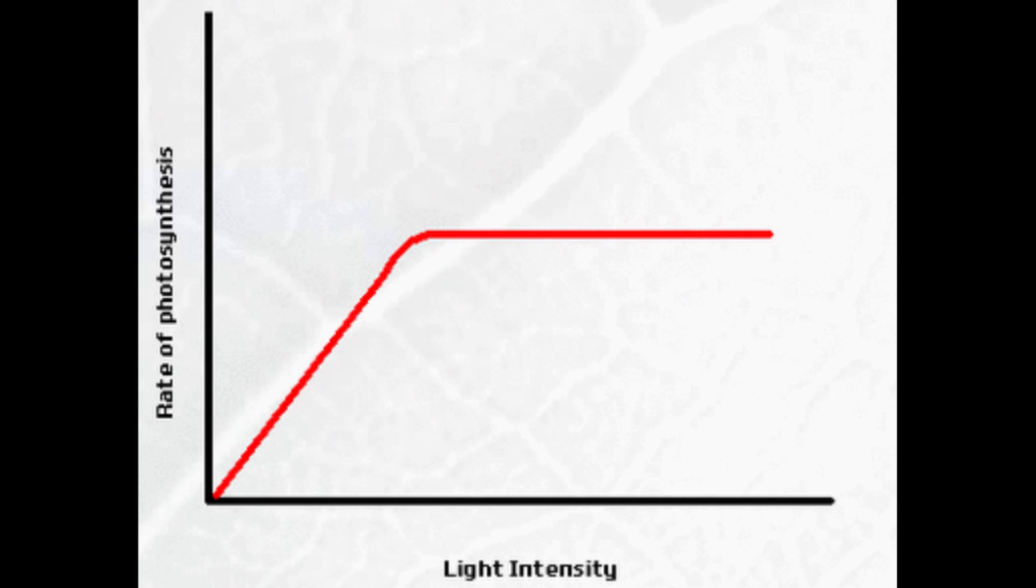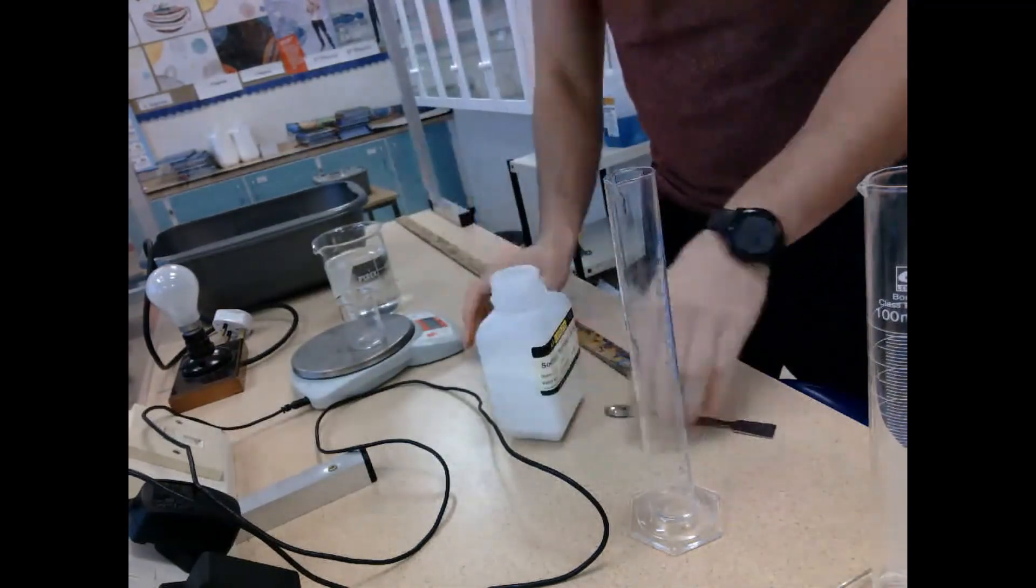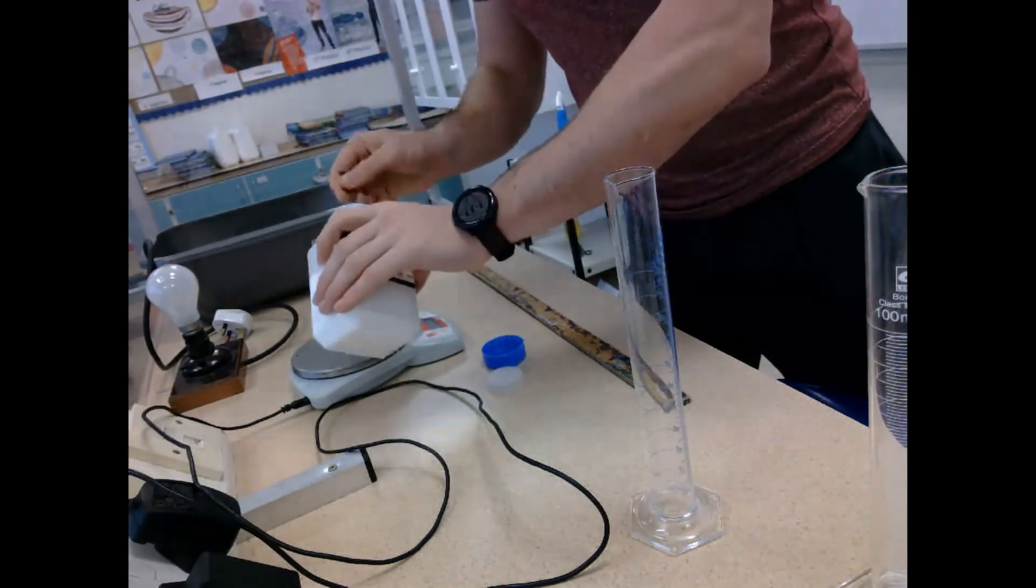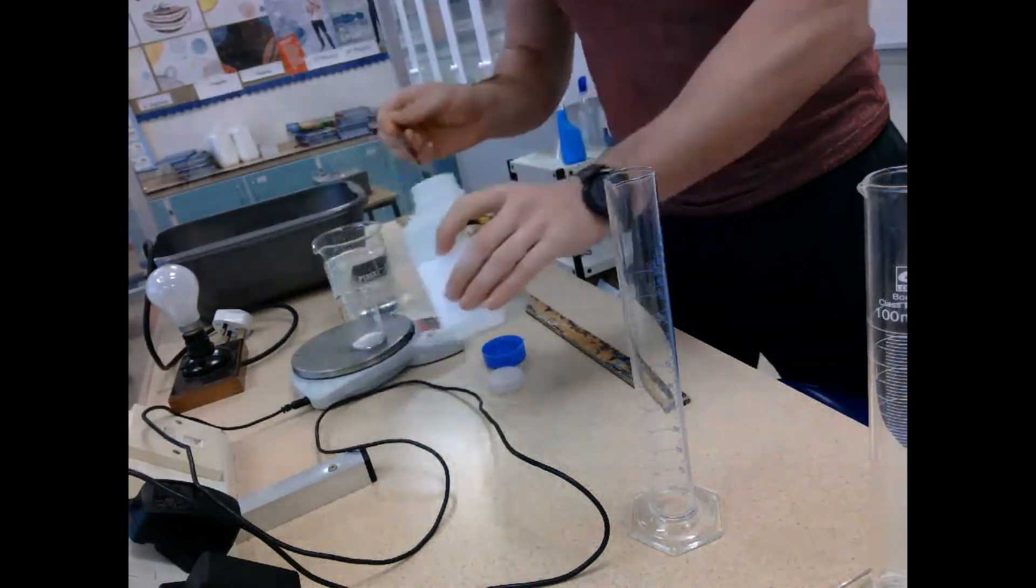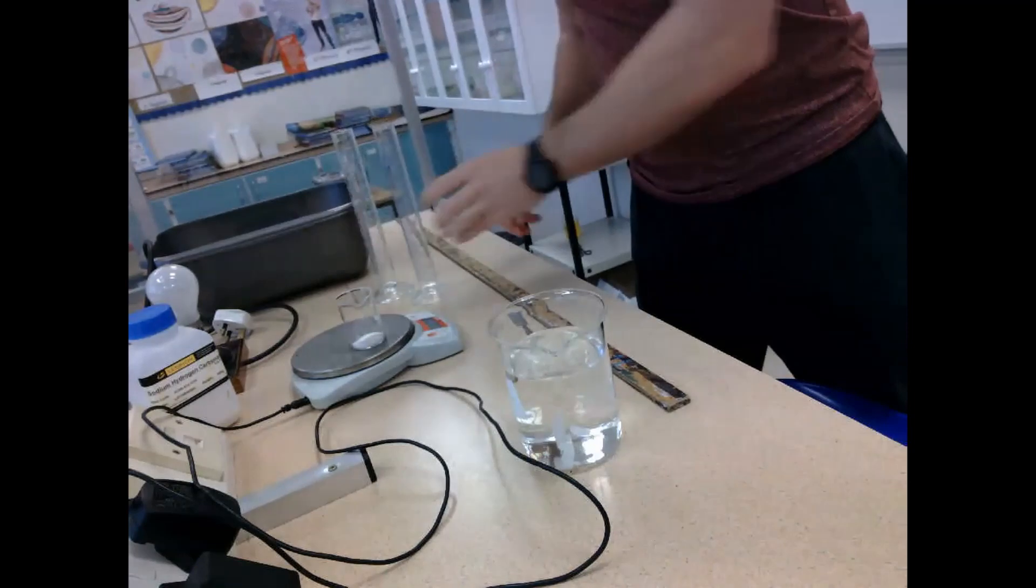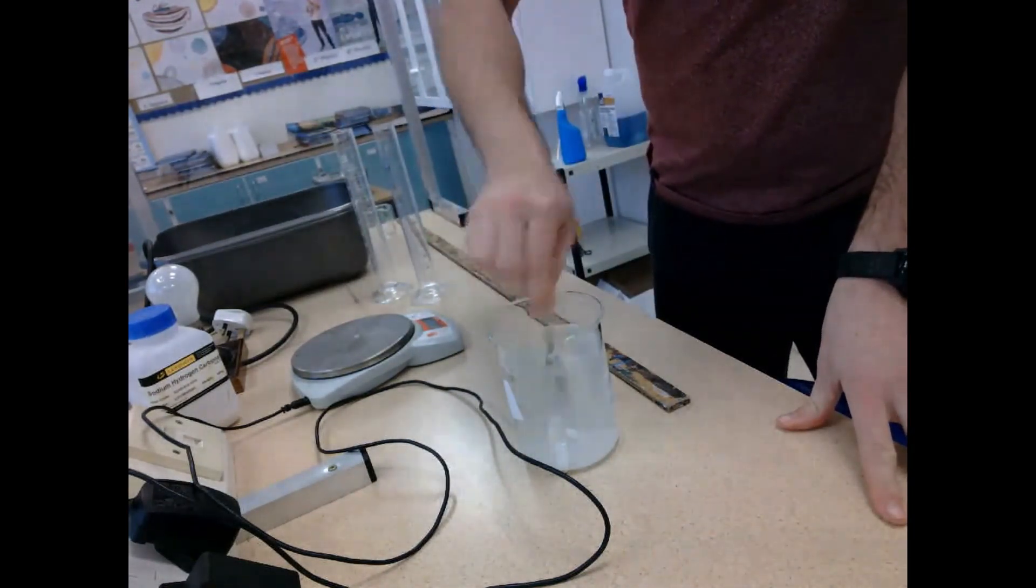So the first thing we have to do here is make sure we have our control in place, and we do this by measuring out sodium hydrogen carbonate. We're going to get five grams of sodium hydrogen carbonate and place this into 500 milliliters of water, stir that up, and what this does is it keeps the level of carbon dioxide steady throughout the entire experiment.